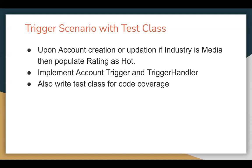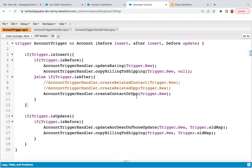Second scenario: you created an account where industry was something other than Media, saved the record, then later updated the record and set industry as Media. In that case also, rating should be populated as Hot. So we need to implement an account trigger, its trigger handler class, and then a test class for code coverage.